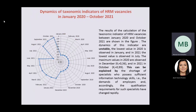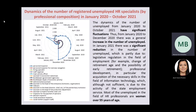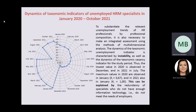The growing dynamics of the taxonomic indicator indicates common trends in individual occupational groups. Dynamics of the number of registered unemployed HR specialists by professional composition in the study period show significant fluctuations. Most of the unemployed in the field of HR professionals are women over 55 years of age. The dynamics of the taxonomic unemployment indicator is characterized by instability, as well as the dynamics of the taxonomic vacancy indicator for the study period.